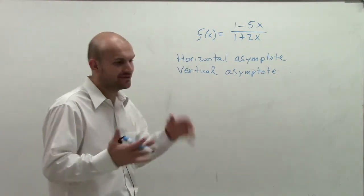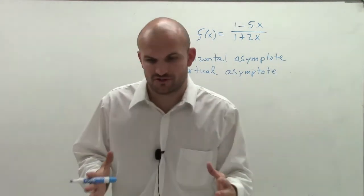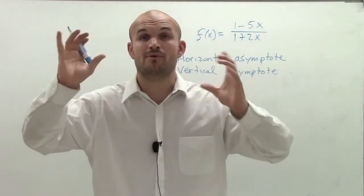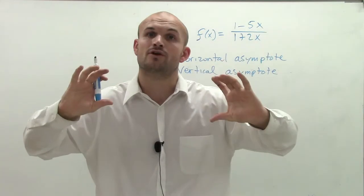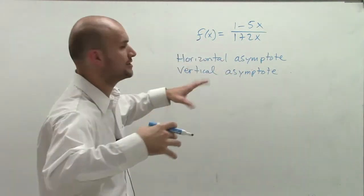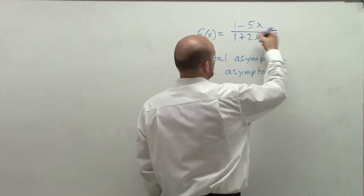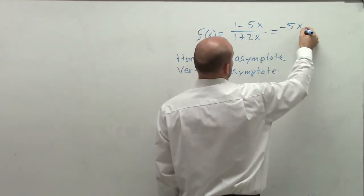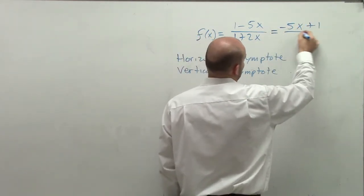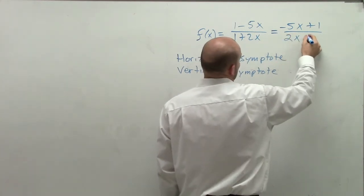So the first thing, remember when we're talking about rational functions, we talked about we have a rational function and we represent them as a polynomial over another polynomial. So the first thing I'm going to do is rewrite these in descending order so I can get an idea of our polynomials. So I have negative 5x plus 1 divided by 2x plus 1.